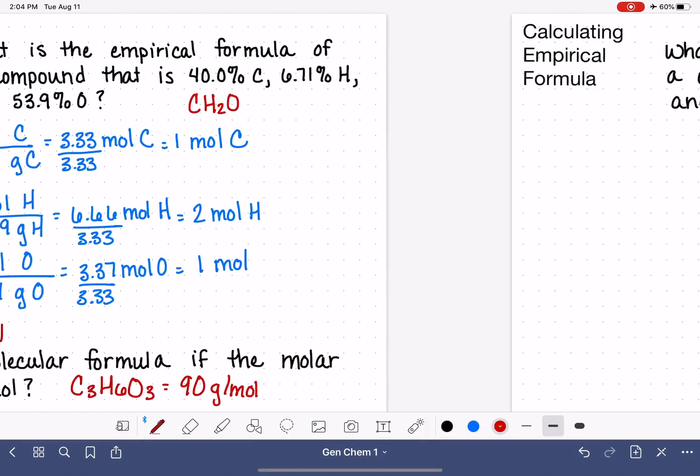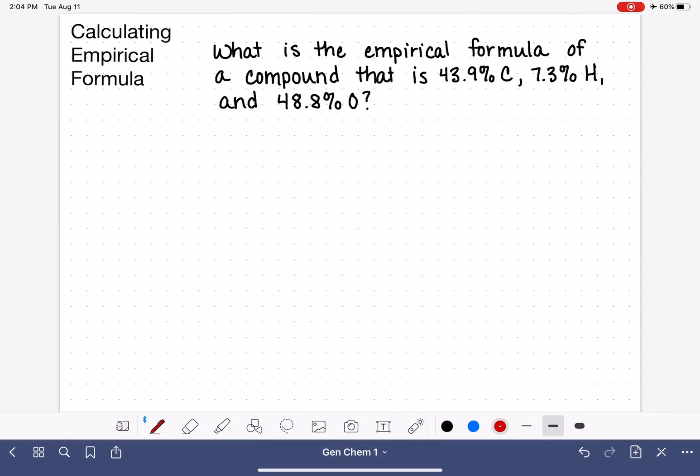Let's look at one more of these problems. This is actually going to be a very complicated one. What is the empirical formula of a compound that is 43.9% carbon, 7.3% hydrogen, and 48.8% oxygen?